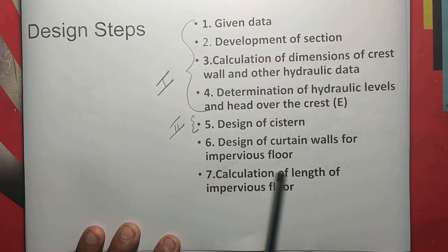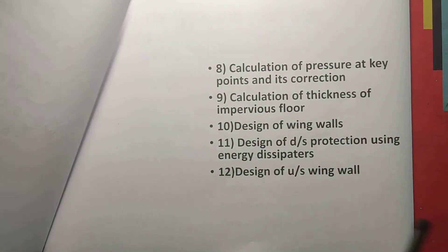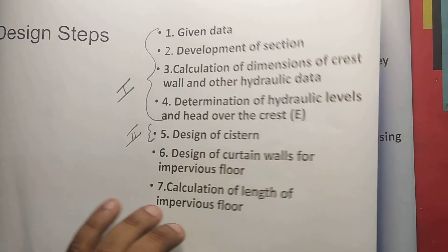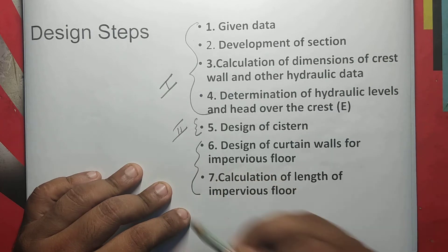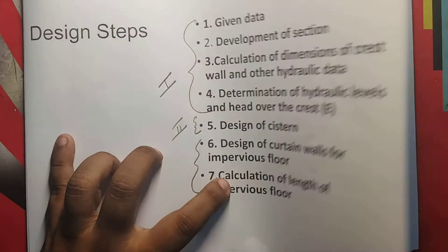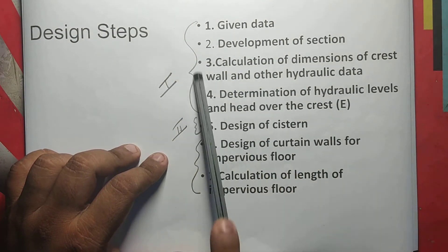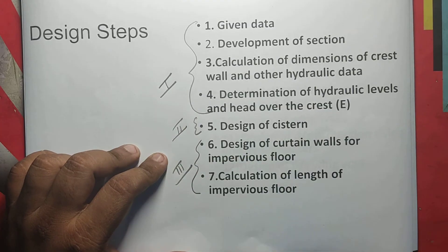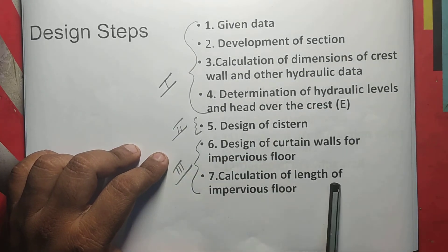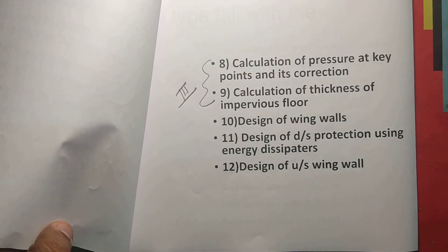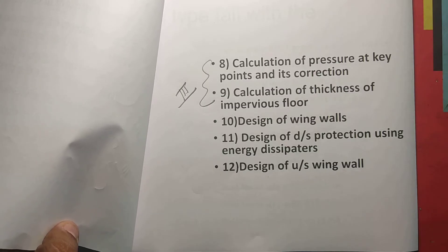Third step is design of curtain walls for impervious floor. Seventh step is calculation of length of impervious floor. Calculation of pressure, key points and its correction. Calculation of thickness of impervious floor. The dimensions of rapid variation of the hydraulic axis, and the pressure and thickness. Design of wing walls, design of downstream protection using energy dissipators, and design of the upstream wing walls.